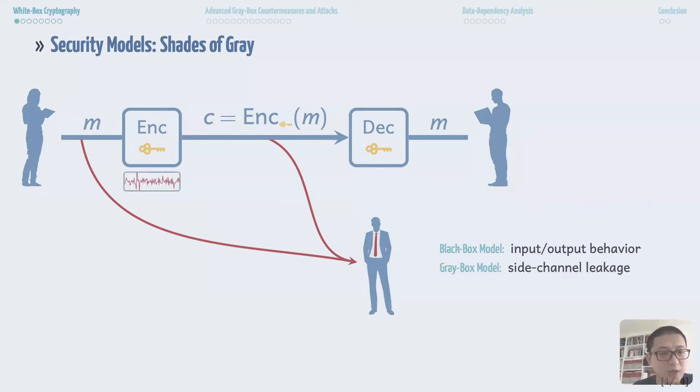The cipher has to be implemented in software or hardware to be useful. When the cipher is implemented in hardware, then the adversary is further able to access the physical information of the execution of the cipher, such as the power consumption. This security model is called a gray box model.